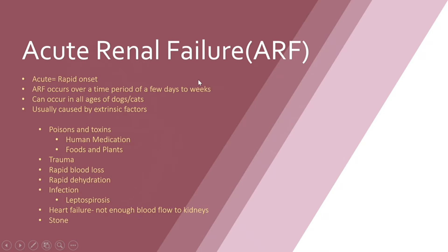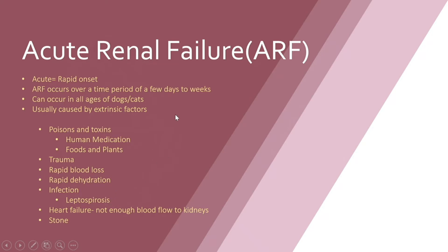Acute renal failure is rapid renal failure that occurs over a period of a few days to weeks, and this is common in all ages of cats and dogs, not just older ones. The main causes are extrinsic factors — factors that aren't in the body. These can include poisons and toxins, such as human medication, certain foods, and plants like lilies, which are toxic to cats. Different trauma causing rapid blood loss or dehydration can also cause acute renal failure, as can infection with the bacteria leptospirosis, which we commonly vaccinate dogs against.